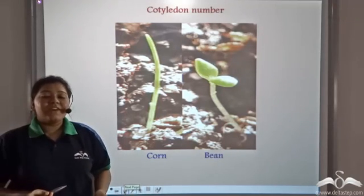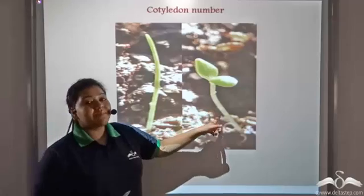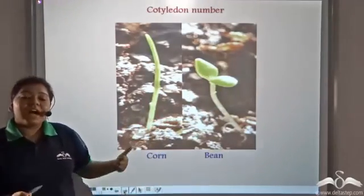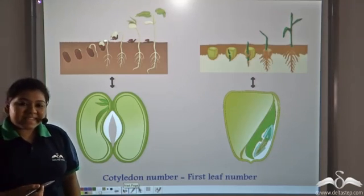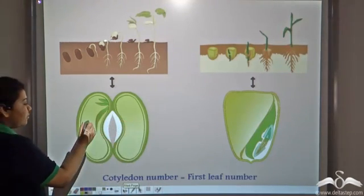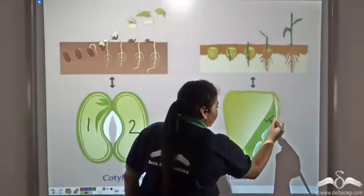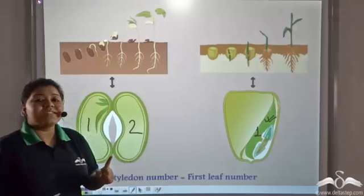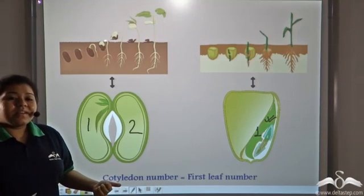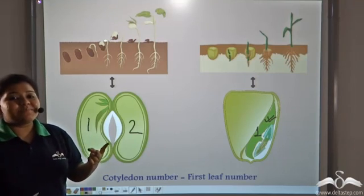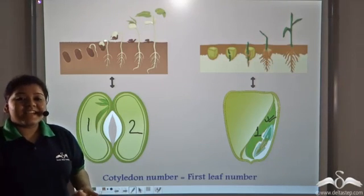We know that cotyledon forms the first leaf of a plant. This is a corn plant, this is a bean plant. By looking at the picture, can you tell me how many cotyledons are present in their seed? Beans have two cotyledons — one, two. Whereas corns have only one cotyledon. There is only one cotyledon in the corn. The cotyledon number is the first leaf number. The bean plant had two leaves, indicating two cotyledons, and the corn plant had one new leaf, indicating only one cotyledon.